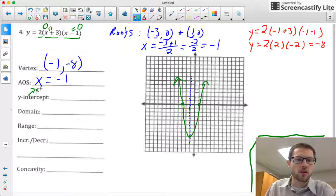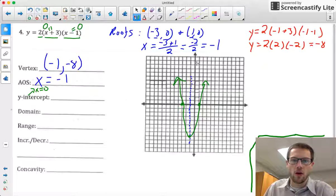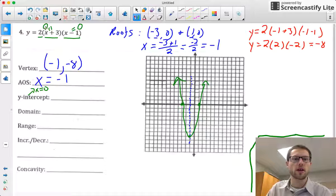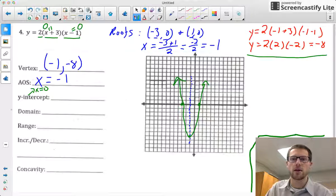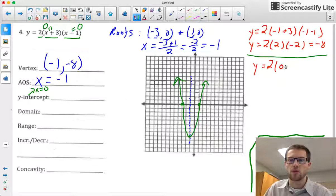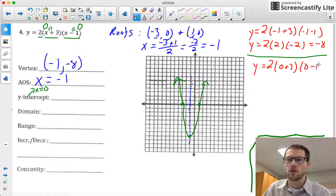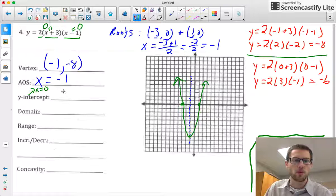To find the y-intercept, I have to remember that x equals 0 wherever my y-intercept is. So if we plug in 0 for x, that's going to help me find my y-intercept. So y is going to equal 2(0 + 3)(0 - 1). So this is going to be 2 times 3 times -1, which is going to equal -6. So my y-intercept is (0, -6).